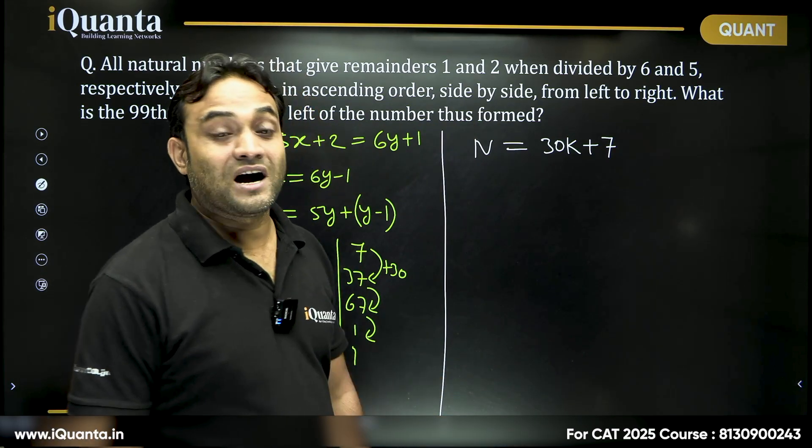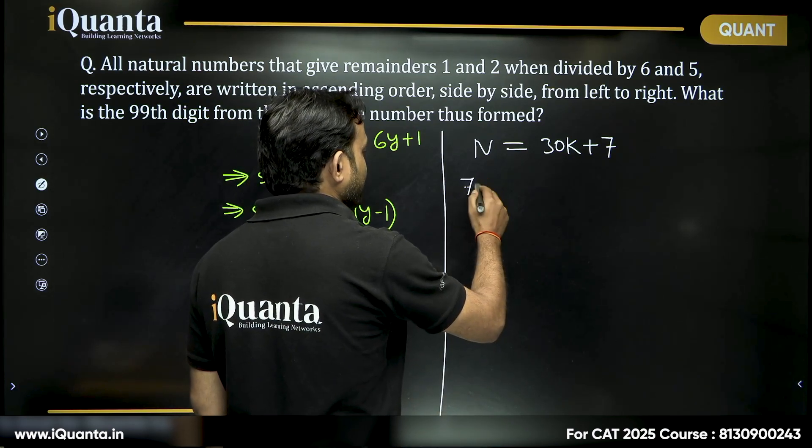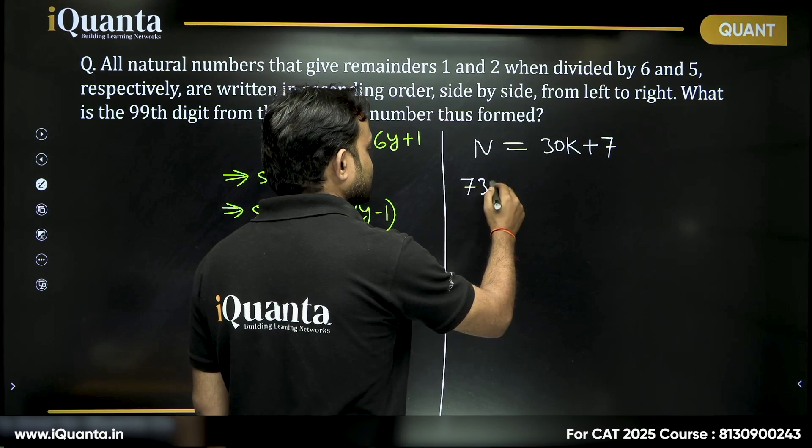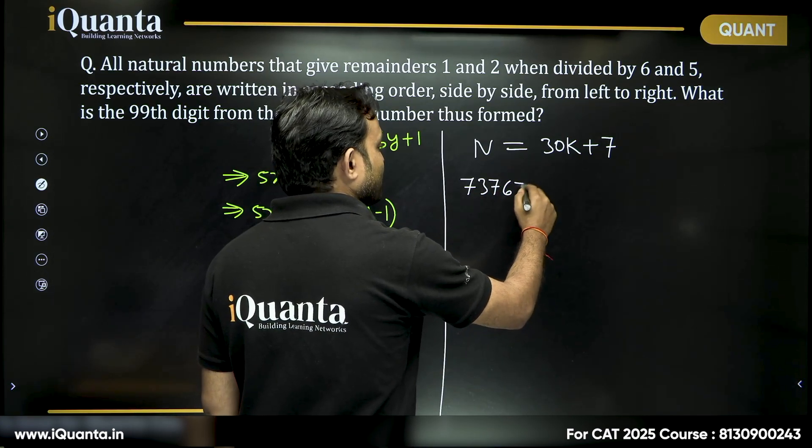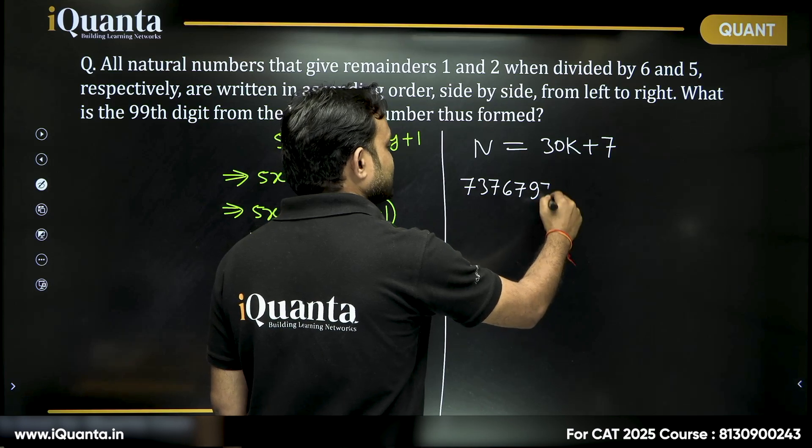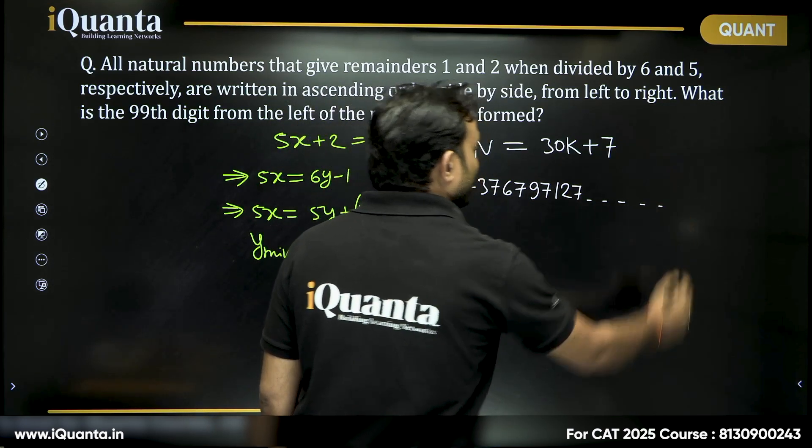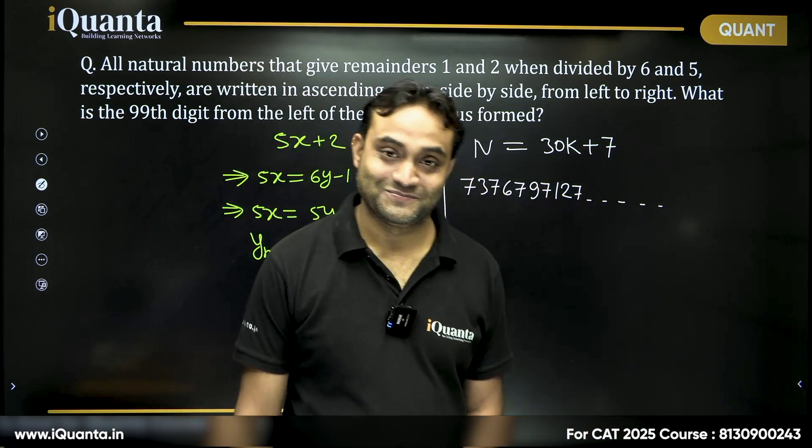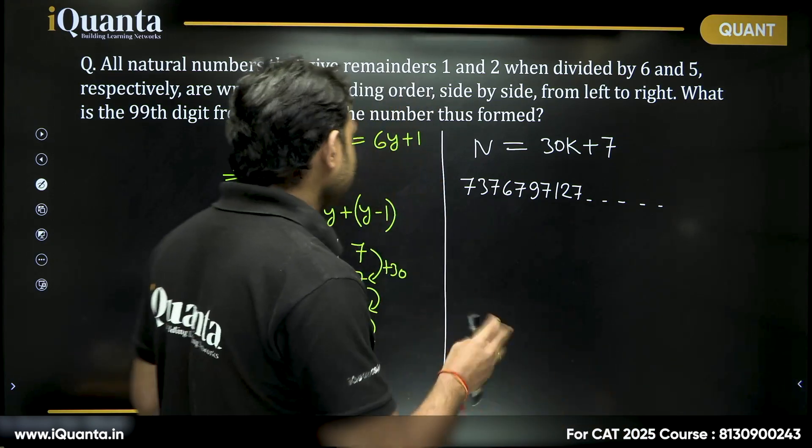So if we start writing these numbers, the smallest number will be 7, then next number will be 37, then next number will be 67, then 97, then 127 and so on. We need to find 99th digit from left. Isn't it amazing, what we can find using basic concepts.